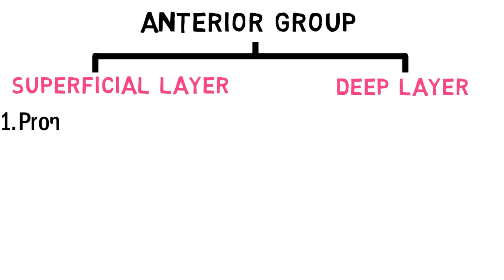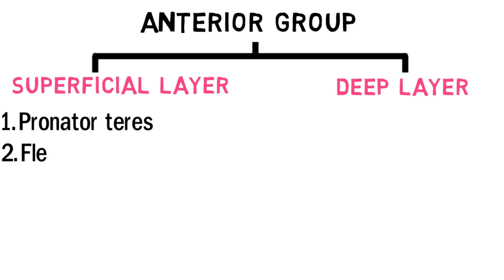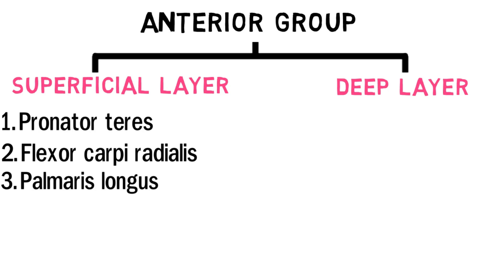Muscles of the superficial layer include pronator teres, flexor carpi radialis, palmaris longus, and flexor carpi ulnaris.